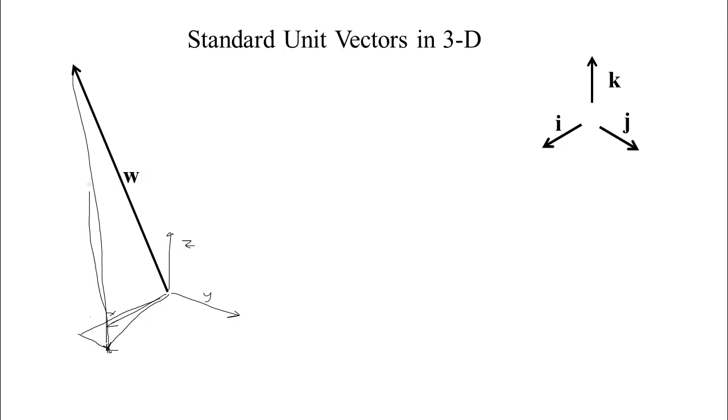And then this vertical component would be the amount of k. So you could give this vector, it looks like maybe it is 3 in the i direction, and 1 in the j direction, and probably 5-ish in the k direction.